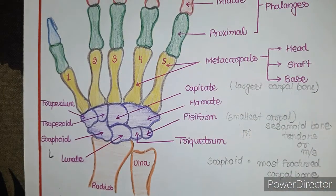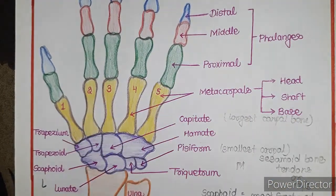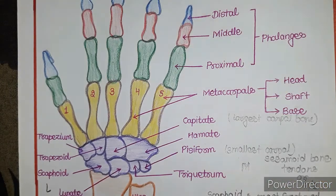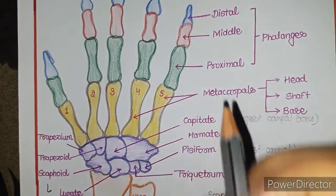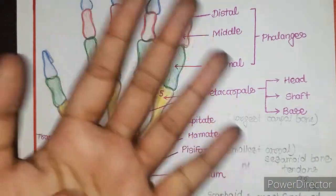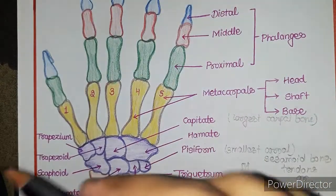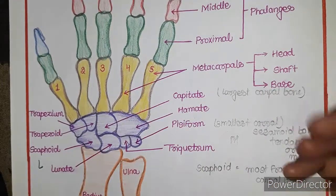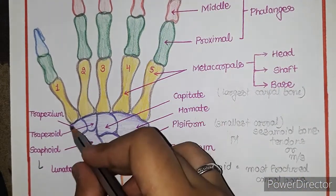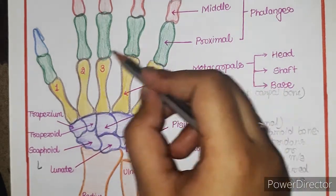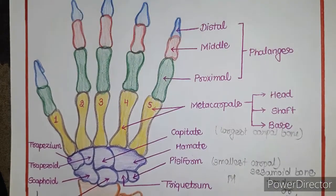The eighth carpal bone is the hamate. Now moving to the metacarpals — these are present in the palm region. When numbering the bones of the hand, we always start with the thumb, which is first, then second, third, fourth, and fifth (the smallest finger). We have five metacarpals and five fingers. Each metacarpal has three parts: base, which attaches to the carpal bones; shaft, the middle part; and head, which attaches to the phalanges.